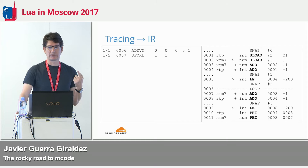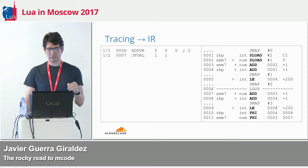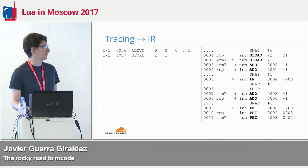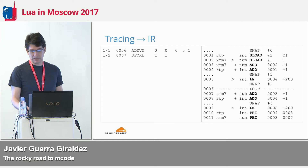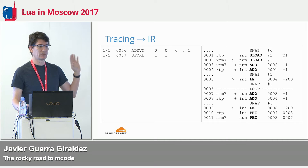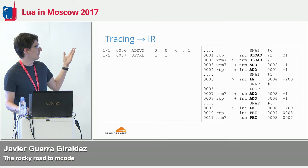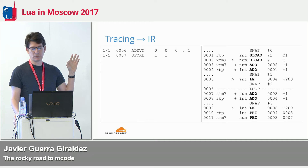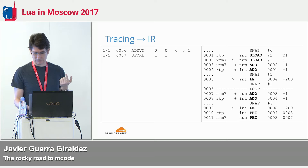What is tracing? It executes once again in the interpreter — we are still in the interpreter — but the interpreter saves each instruction it encounters and sends it to the recorder. The recorder emits the IR, the Intermediate Representation. It looks like assembly code, but it's never executed — it's not executable code. It's just a representation of what the interpreter is doing. It doesn't represent your whole code; it only records what actually happened on this extra execution.